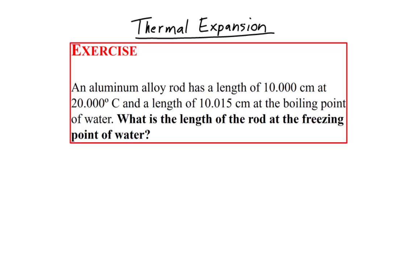An aluminum alloy rod has a length of 10 centimeters at 20 degrees Celsius and a length of 10.015 centimeters at the boiling point of water. What is the length of the rod at the freezing point of water?